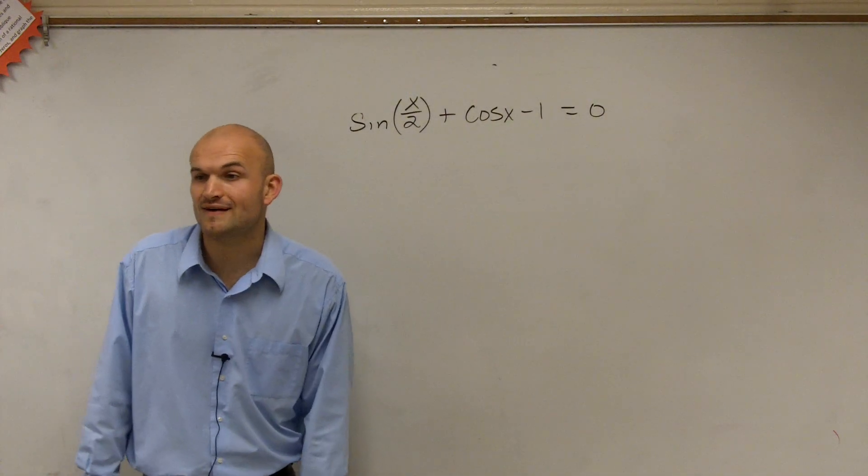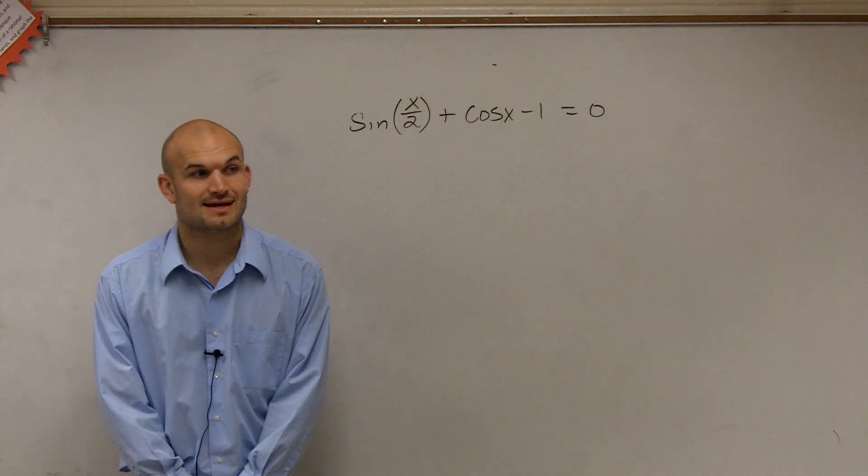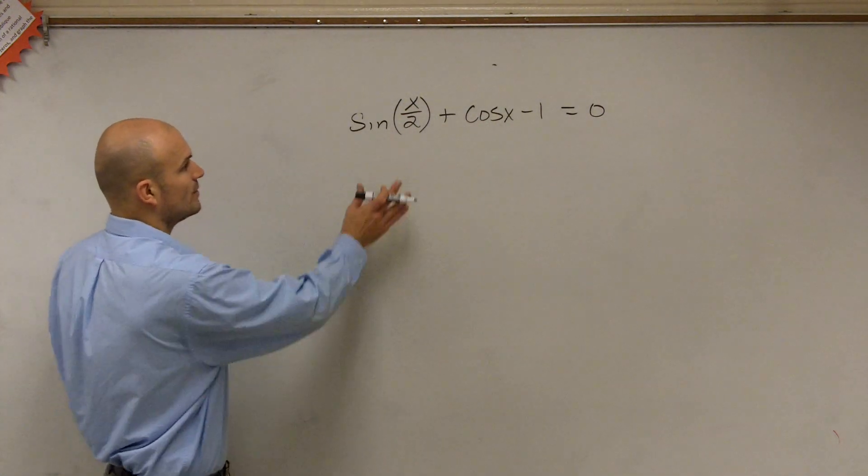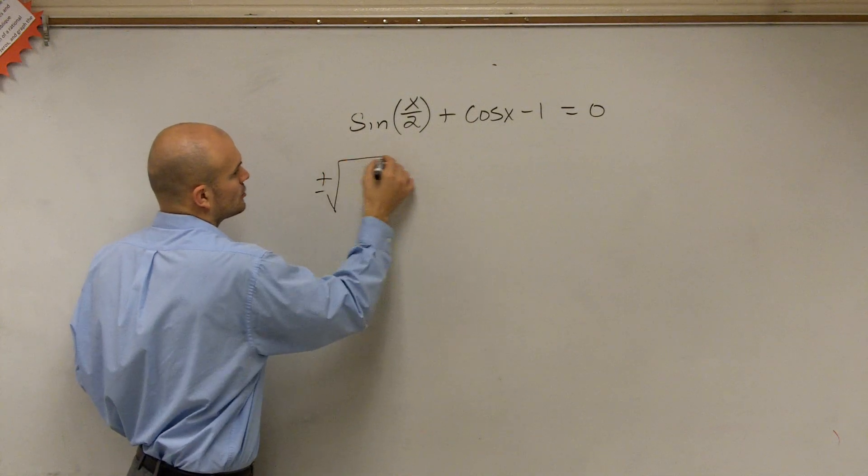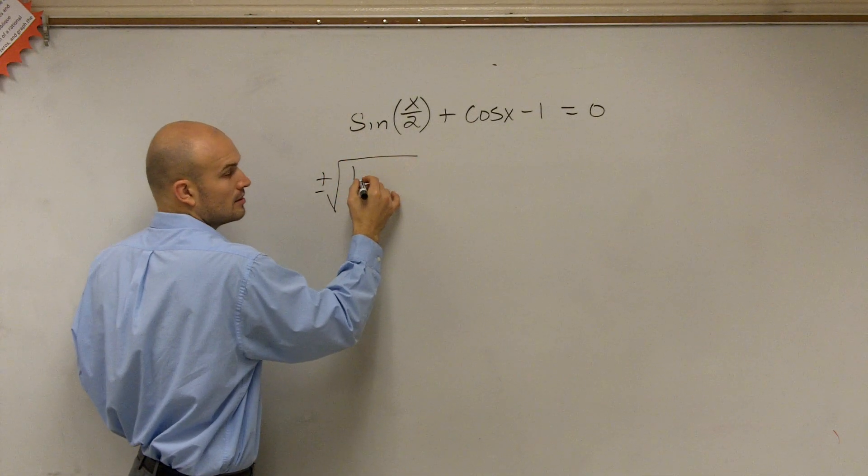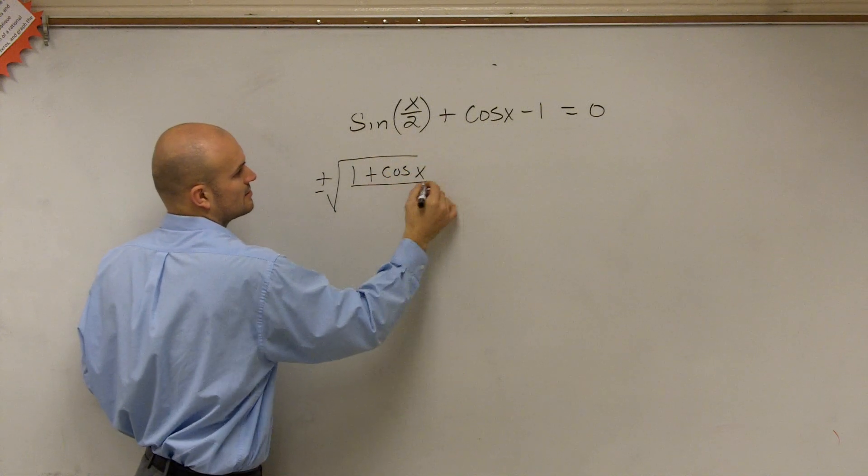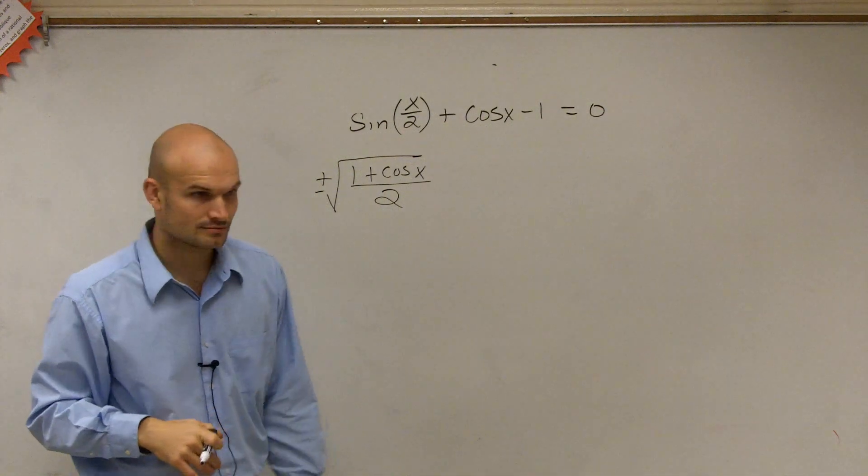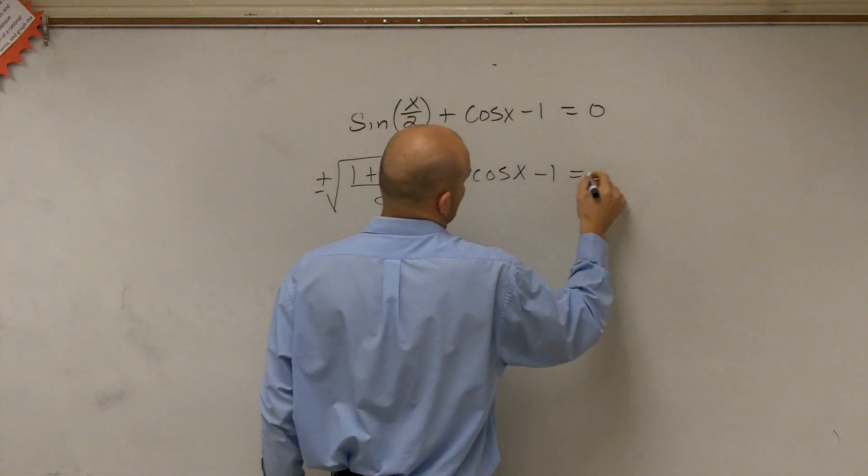And I have a formula for that, right? So we can rewrite this then as plus or minus the square root of 1 plus cosine of x divided by 2. Anybody want to confirm my formula with me? Plus cosine of x minus 1 equals 0.